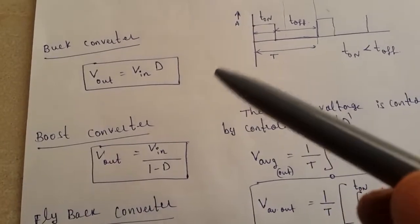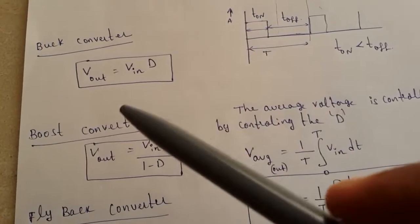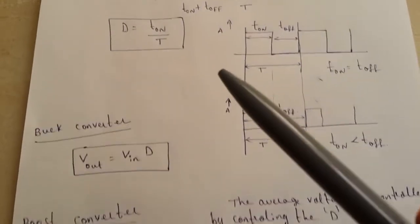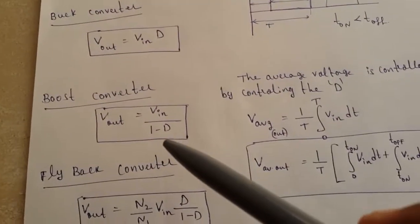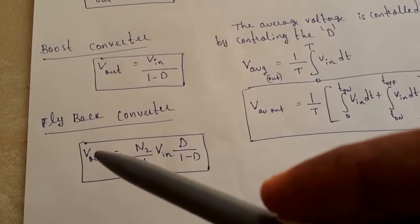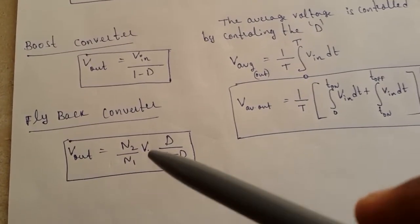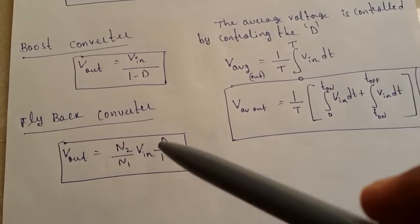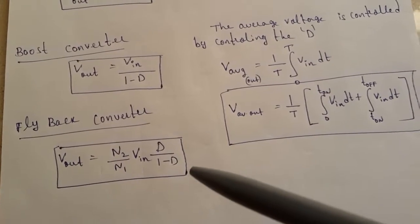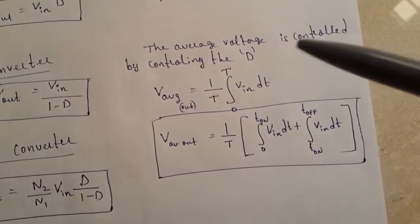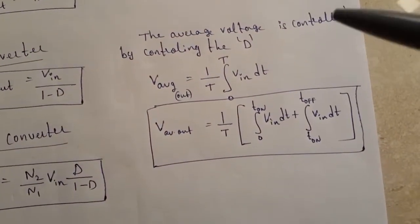For a switch mode power supply buck converter, the output equals V_in multiplied by D, the duty cycle. For a boost converter, V_output equals V_in divided by (1 minus D). For a flyback converter, V_output equals (N2/N1) times V_in times D divided by (1 minus D), where N2/N1 is the turns ratio.